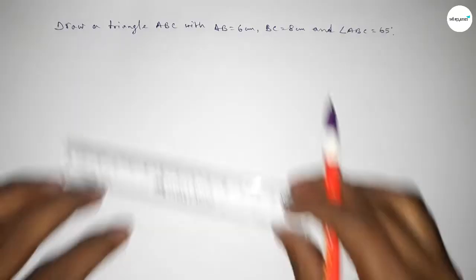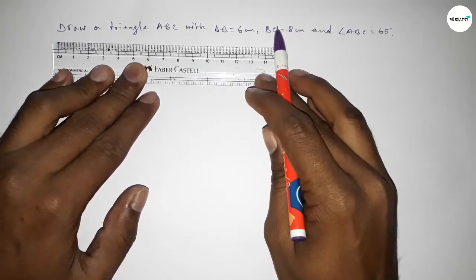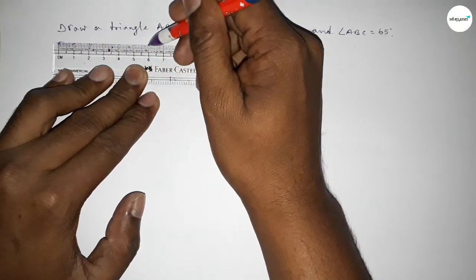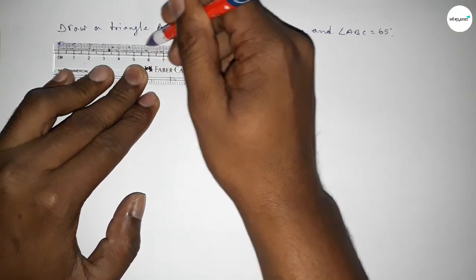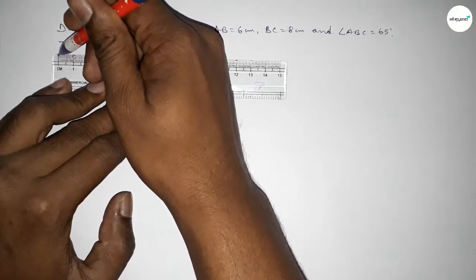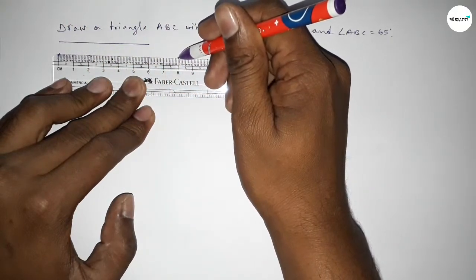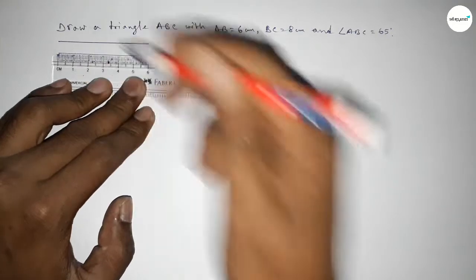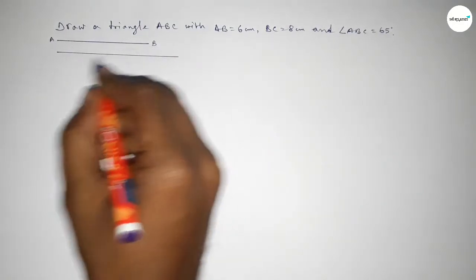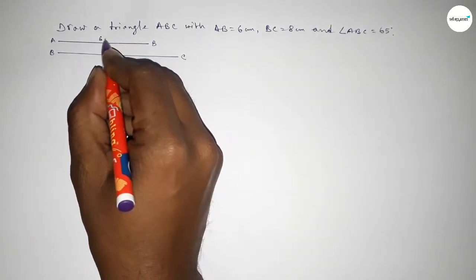First of all, drawing the length AB equal to 6 centimeters — starting 0, 1, 2, 3, 4, 5, 6. Then drawing another line of length 8 centimeters — starting 0, 1, 2, 3, 4, 5, 6, 7, 8. So this is AB at 6 centimeters and this is BC at 8 centimeters.